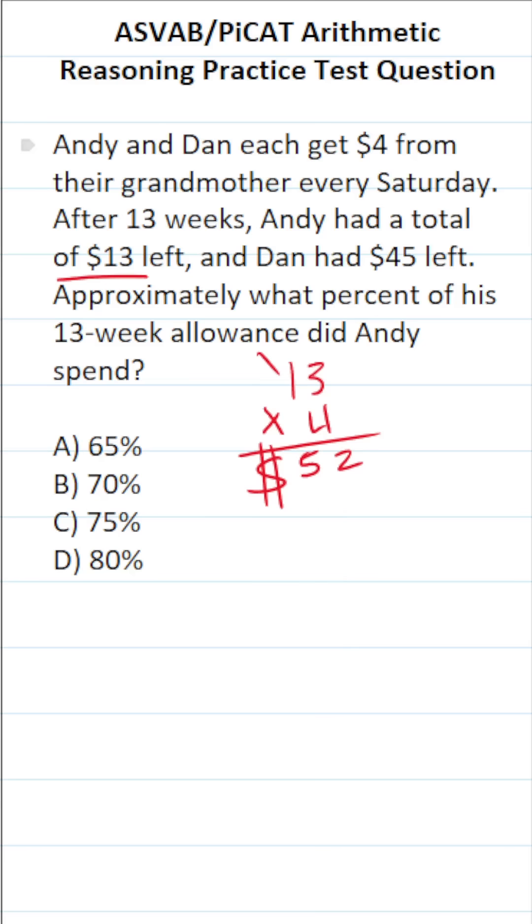And since Andy only has $13 left, to determine how much he spent, we're going to do 52 minus 13. We can't do 2 minus 3, so we have to borrow. This becomes 4, this becomes 12. 12 minus 3 is 9, 4 minus 1 is 3. So in other words, Andy spent $39 of the $52 that his grandmother gave him.